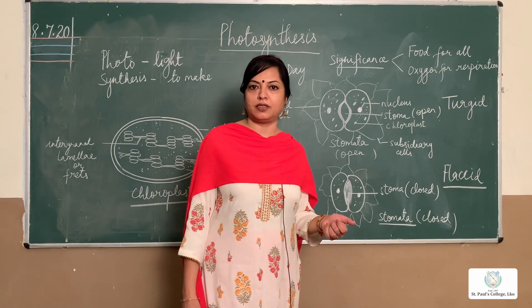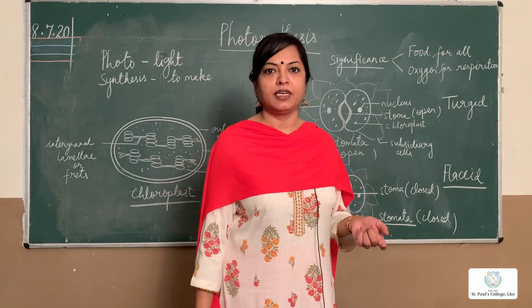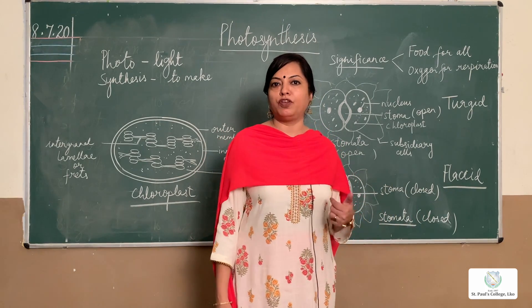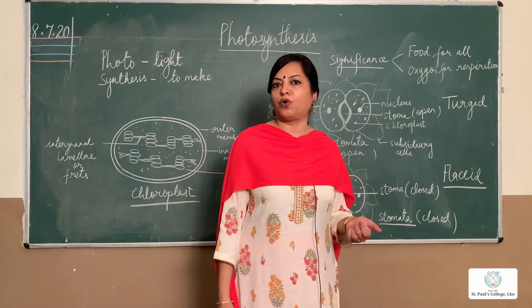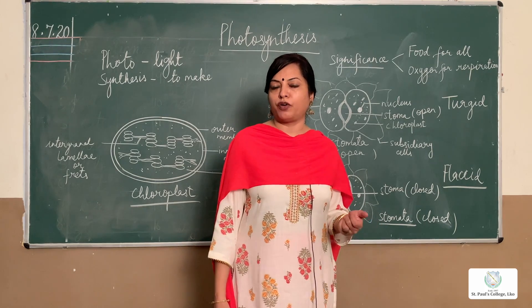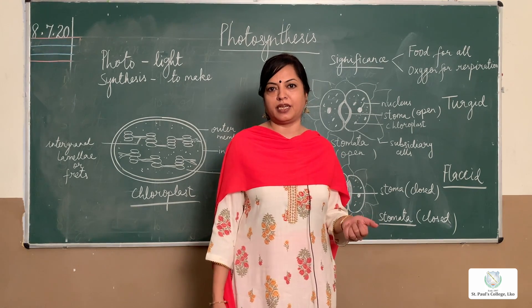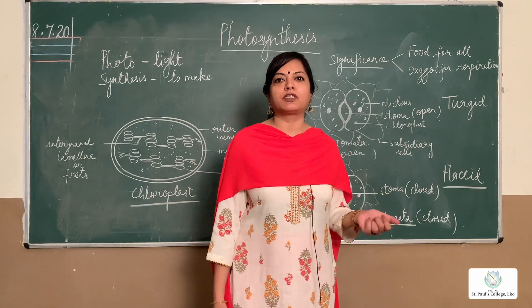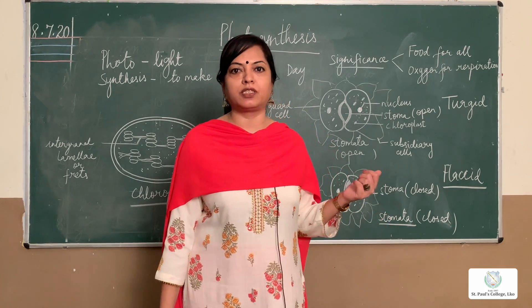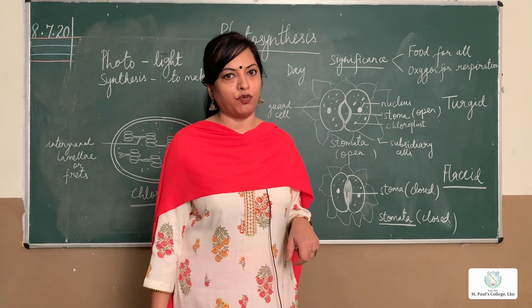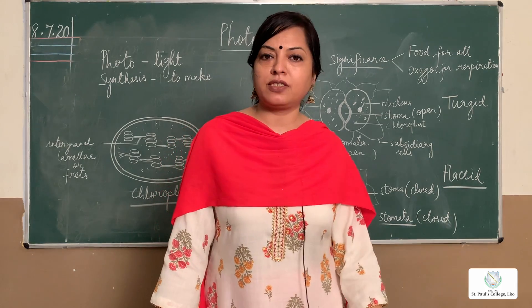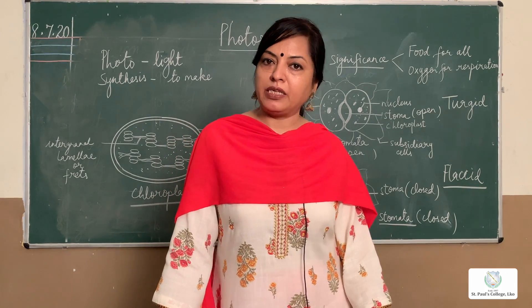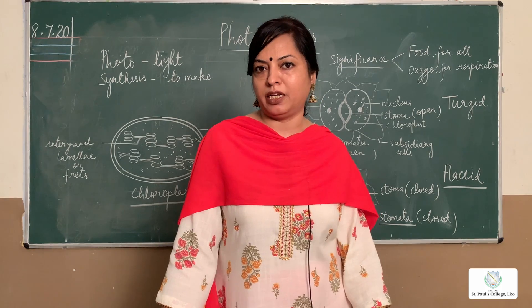Secondly, chlorophyll provides oxygen to all, and we all need both food and oxygen for our survival. So in short, chlorophyll is the basis of survival on this earth, and so is the process of photosynthesis. Now let's talk about the green pigment chlorophyll. Basically, chlorophyll is of nine types, but the two main types are chlorophyll a and b.